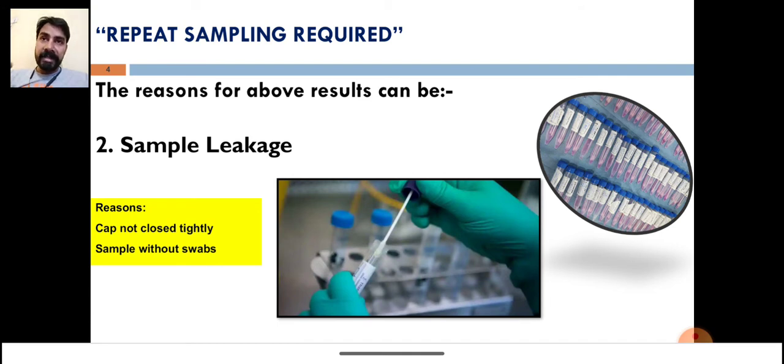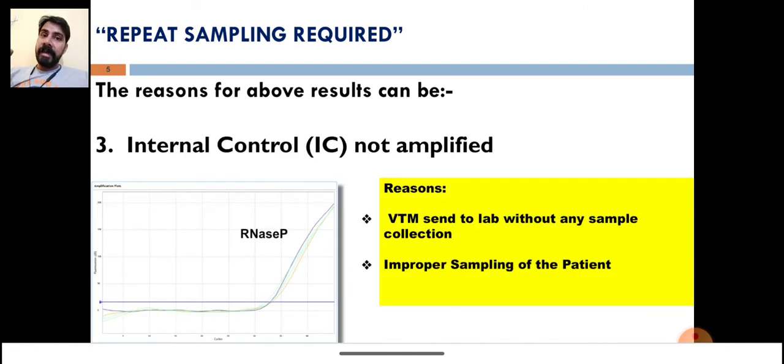The next reason is internal control not amplified. This is not a reason related to the collection facility. For example, your sample is collected, but in RT-PCR we didn't get any internal control amplification.